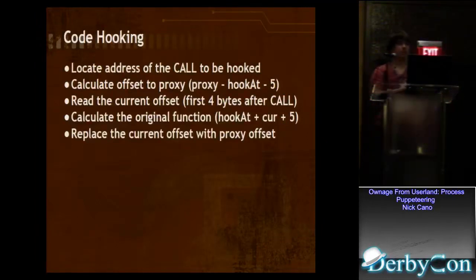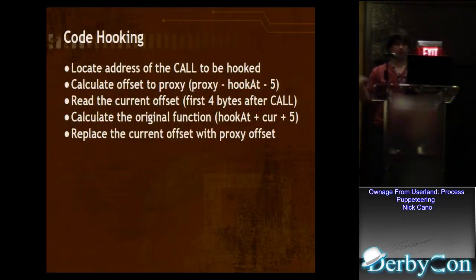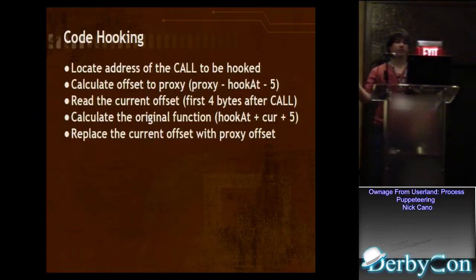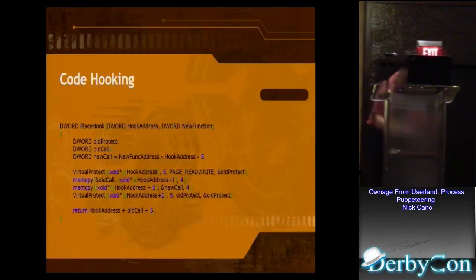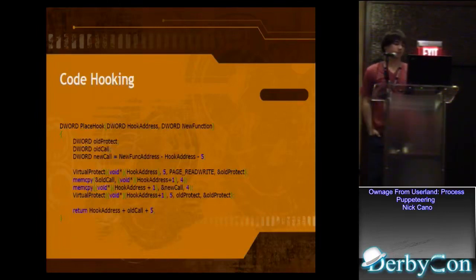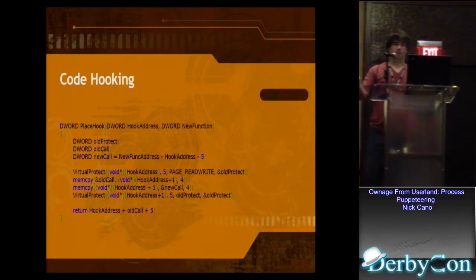Code hooking — you locate the address of the call you want to hook, then calculate the offset to your proxy function: the address of the proxy function minus the address where your hook is, minus five. You can read your current offset if you plan on calling that function, store it for later, calculate what that function actually was, and then replace the current offset with the offset of your proxy function. The code is pretty simple — calculate our address, do VirtualProtect, then just copy the memory into place. You don't even have to play with the actual call opcode; it's already in place, so you just put your offset in and it'll call your function instead of what's there.